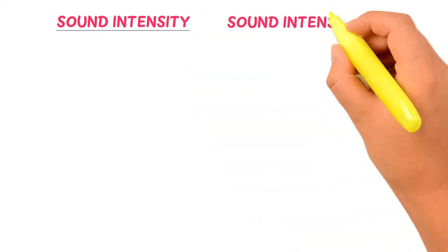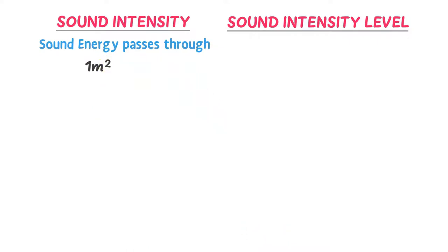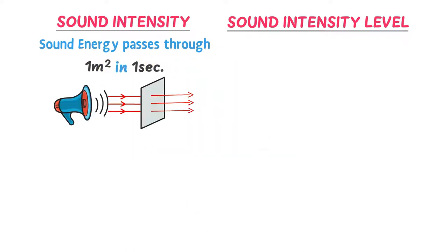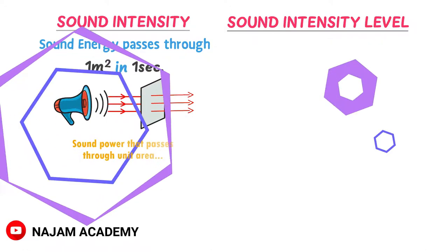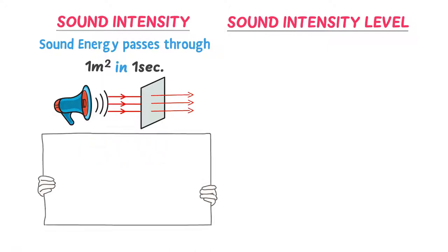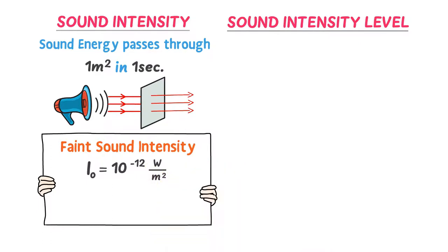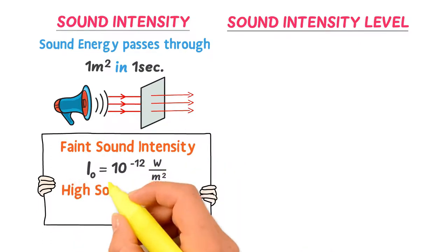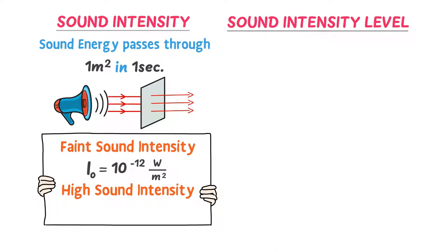Let me teach you the difference between sound intensity and sound intensity level. In the previous lecture we learned all about sound intensity — sound energy that passes through 1 meter squared area in 1 second, or sound power passing through 1 meter squared area. The faintest sound intensity the human ear can hear is I₀ = 10⁻¹² watts per meter squared, and the maximum is 1 watt per meter squared.